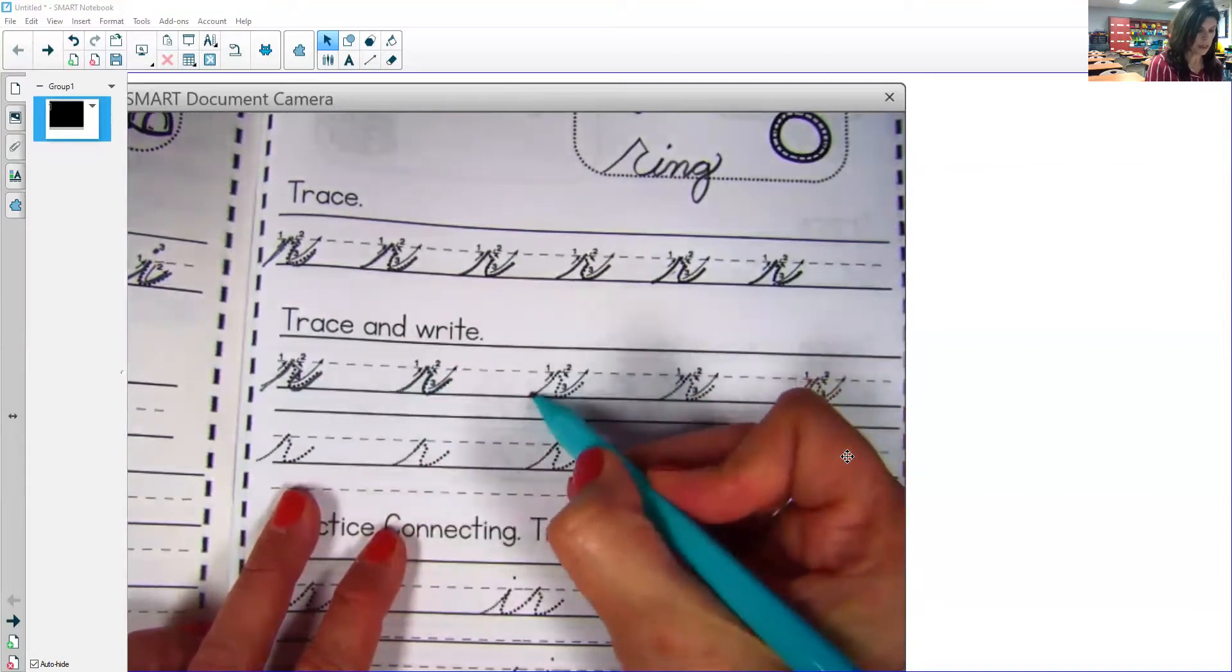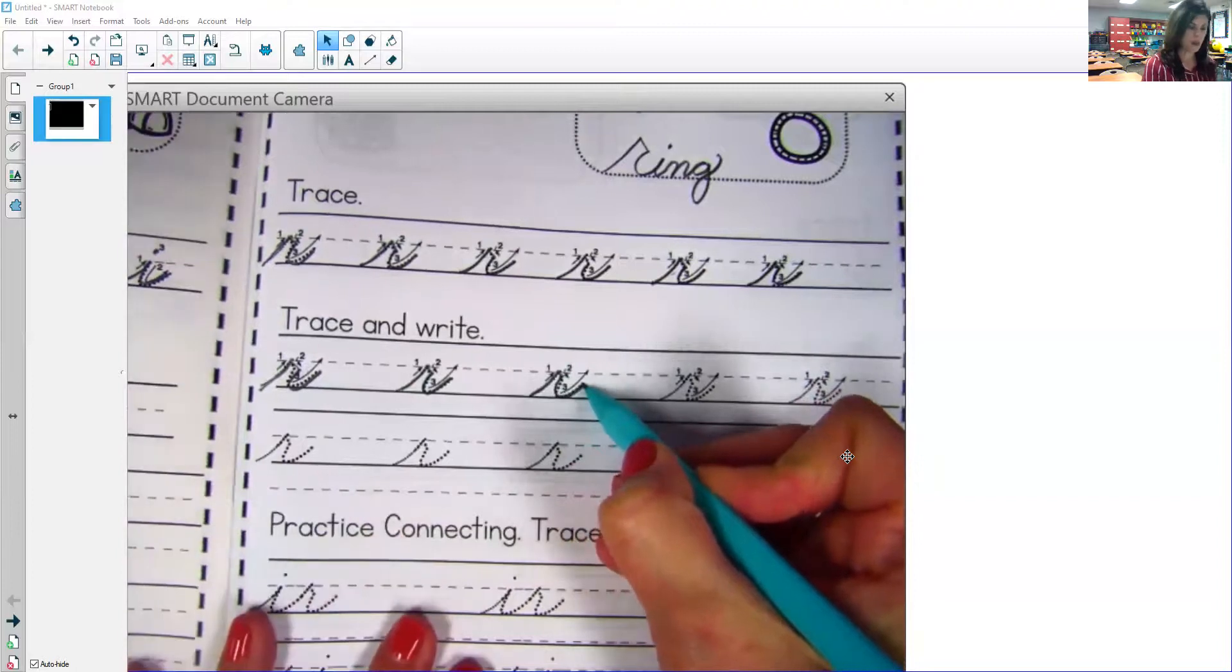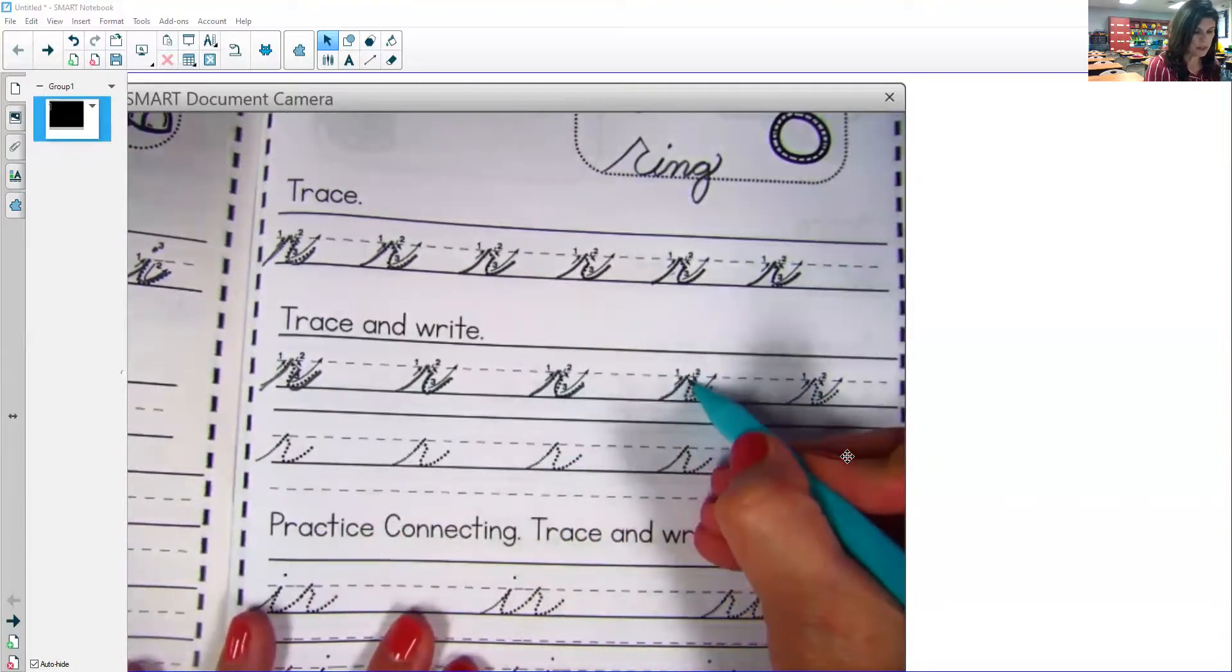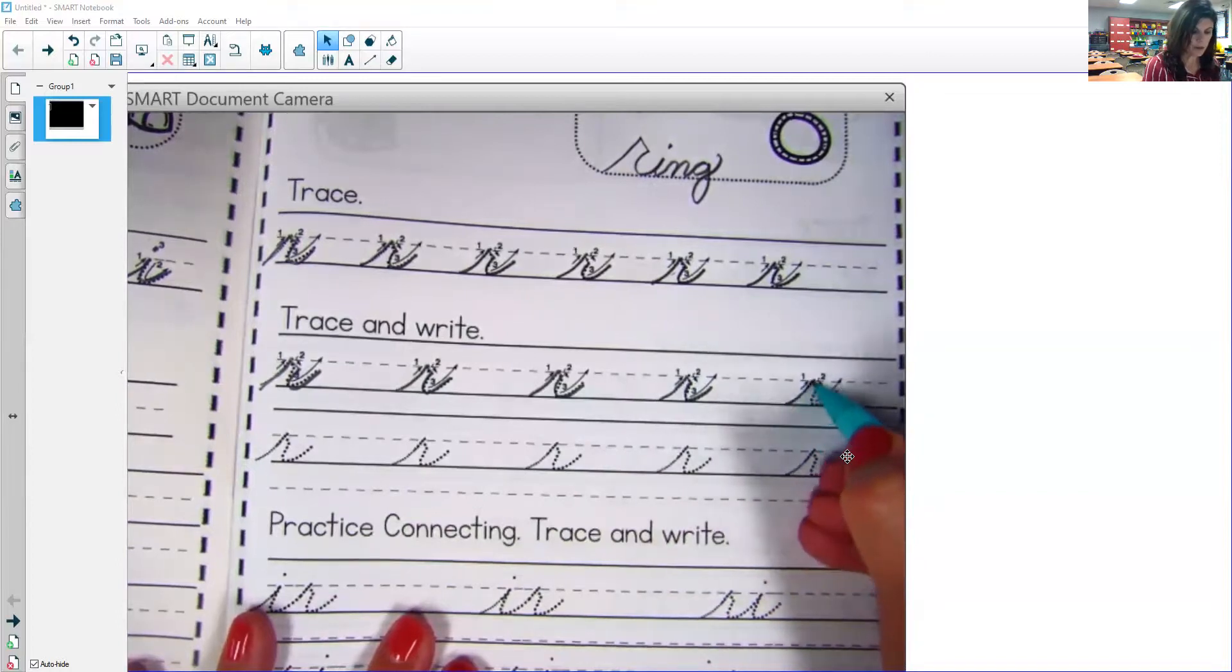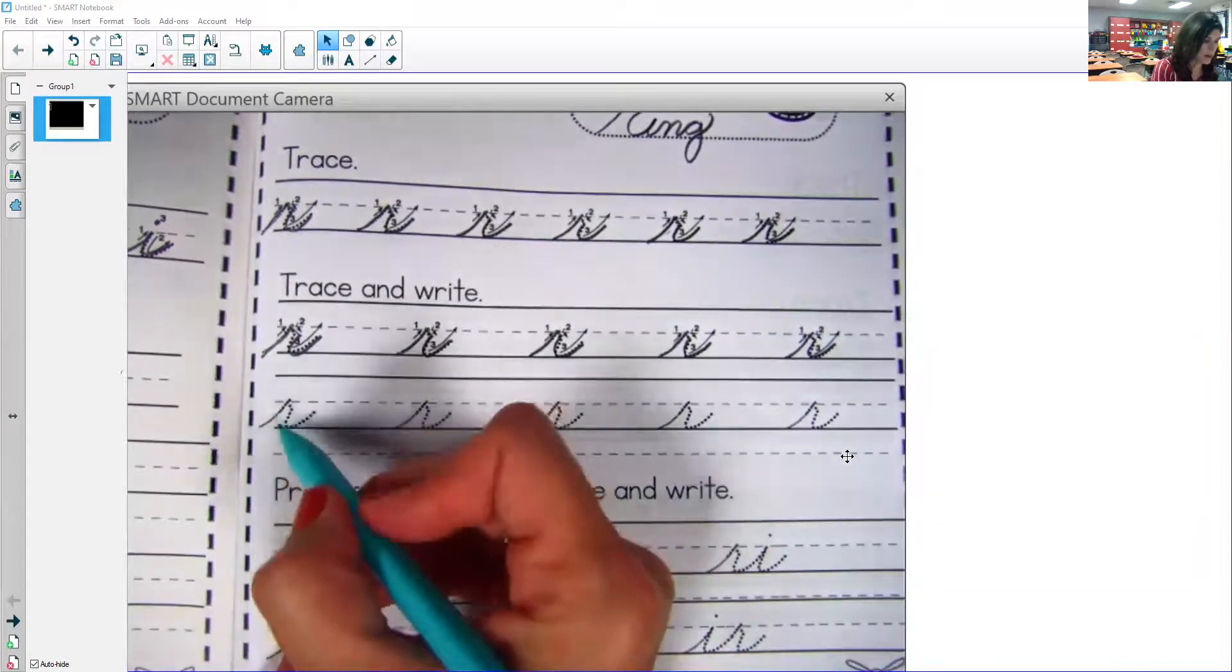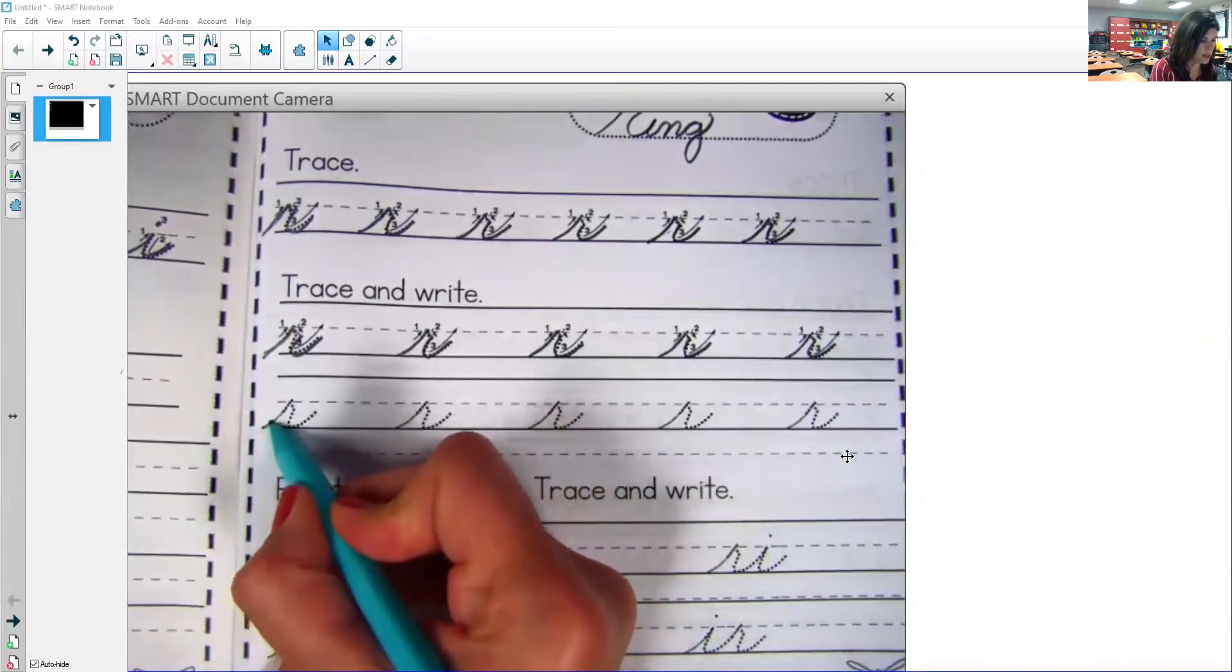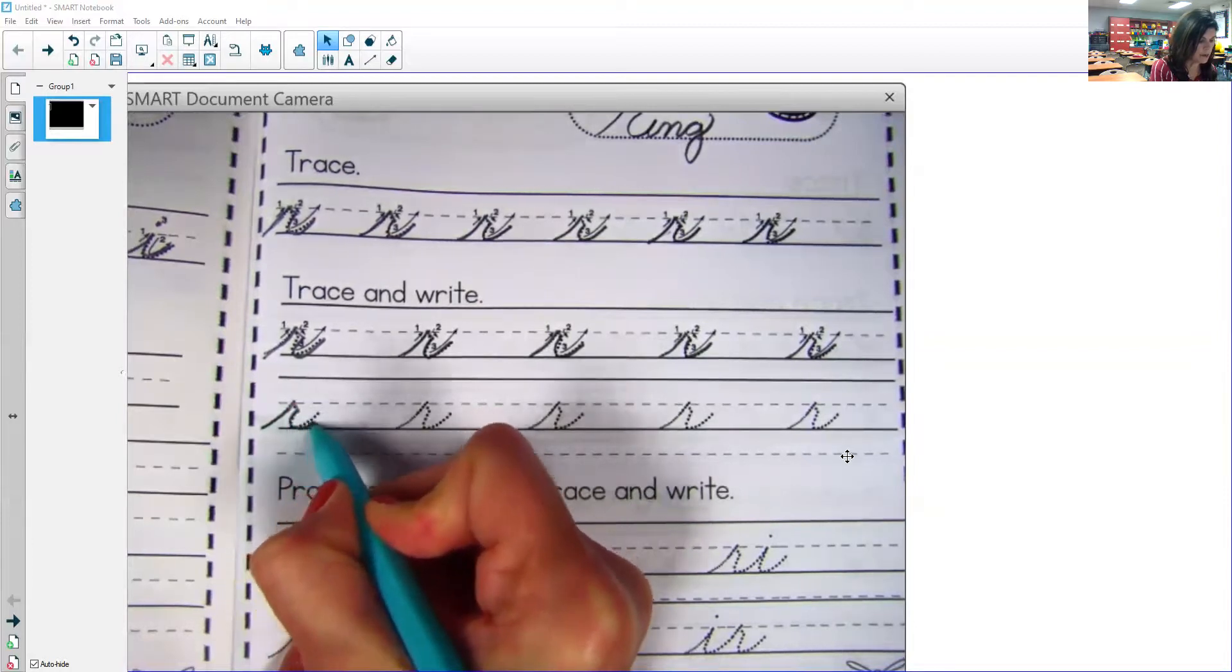Okay, it's pretty easy. And remember, the reason they have that scoop up is because it's going to be a lot easier whenever you form your letters from R to make a word. All right, our last line on trace and write section. Up, touch, slant, down, and up.